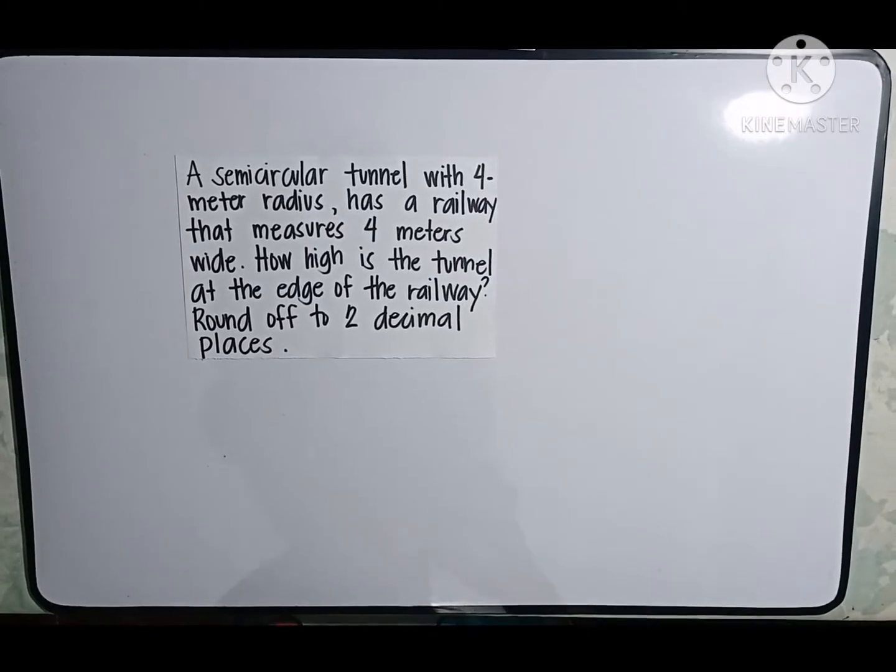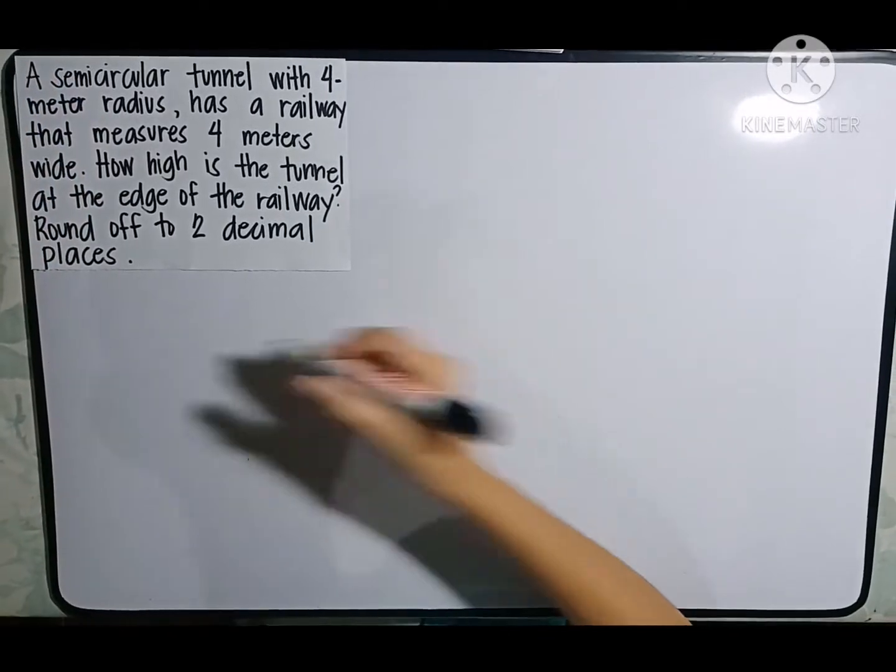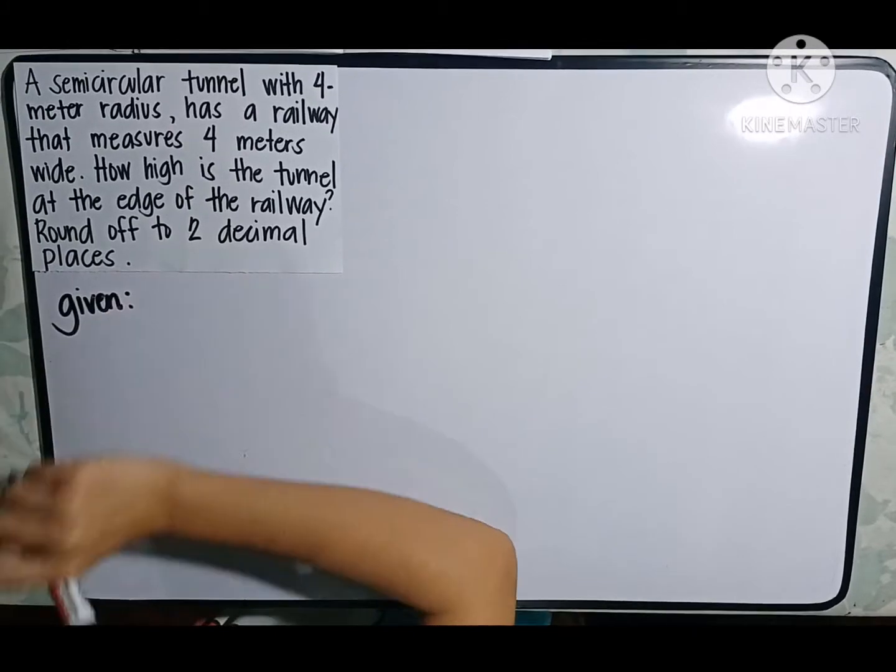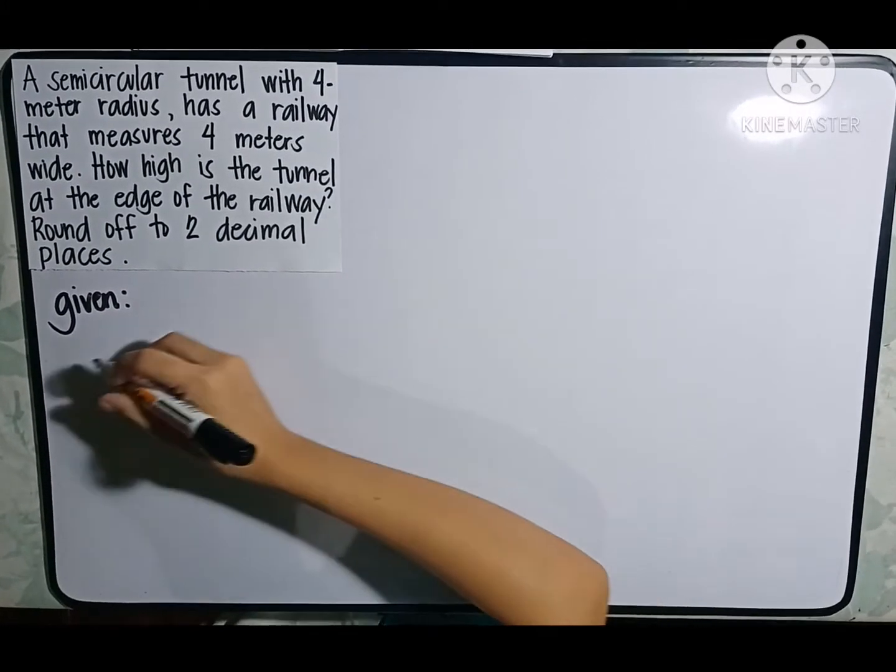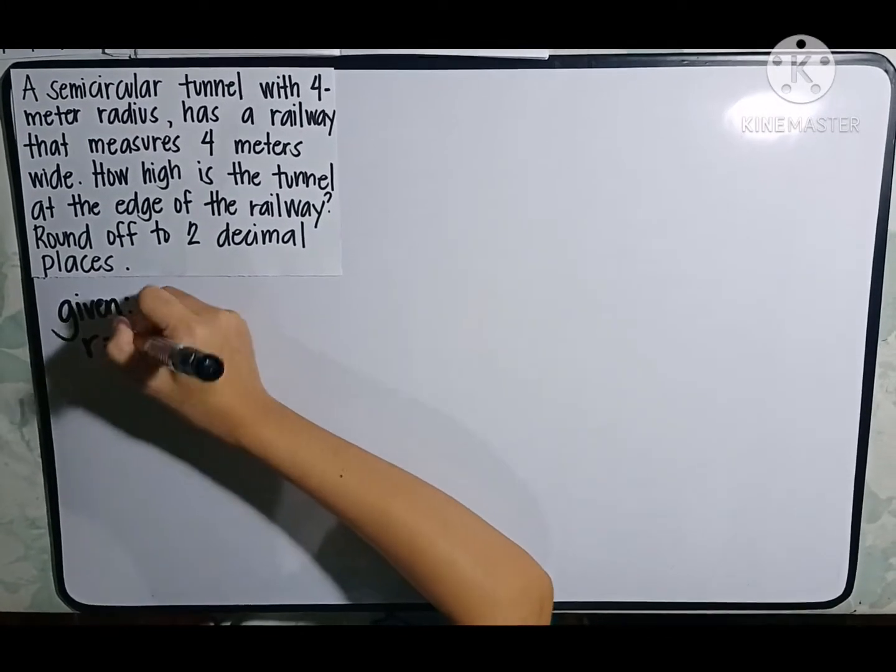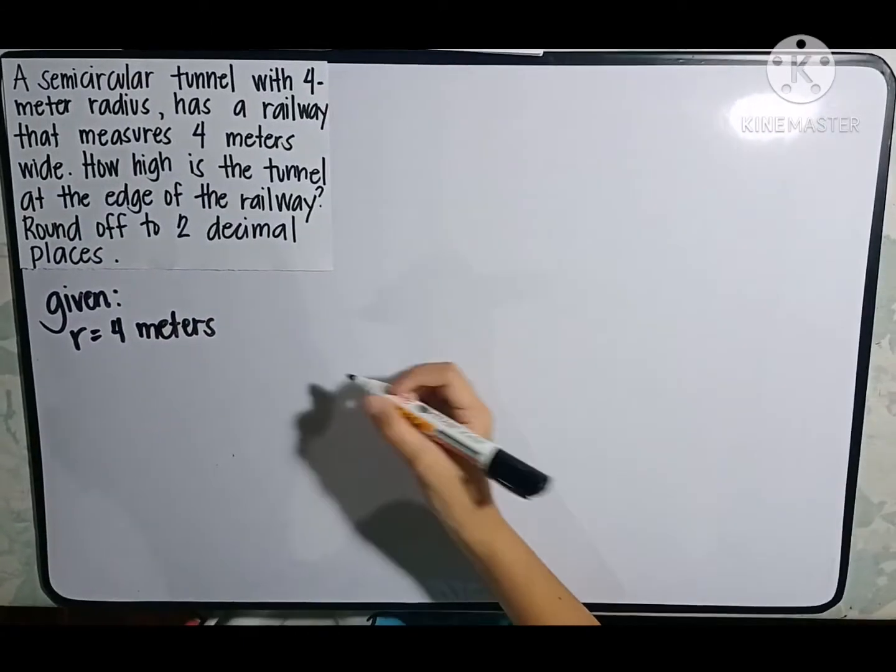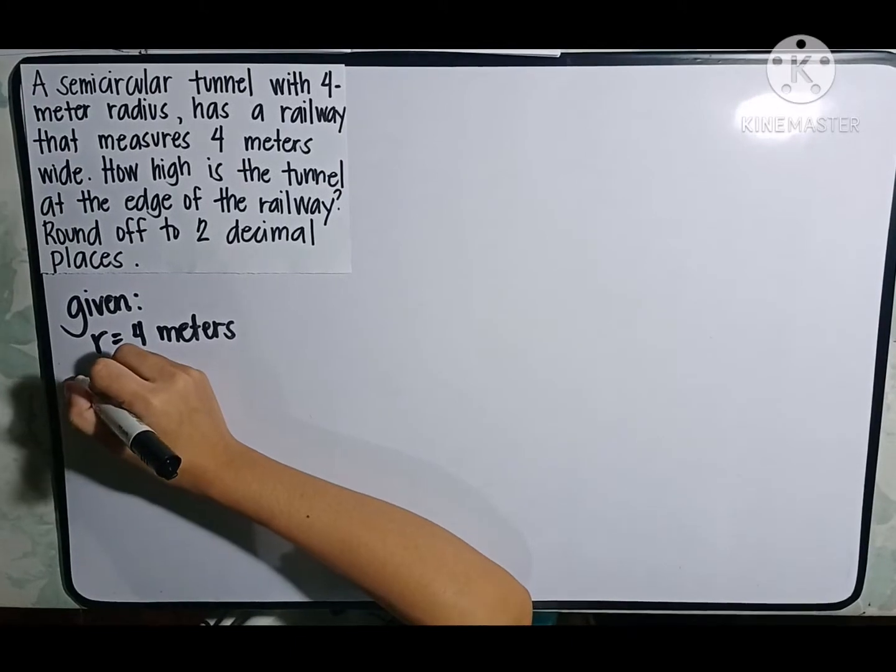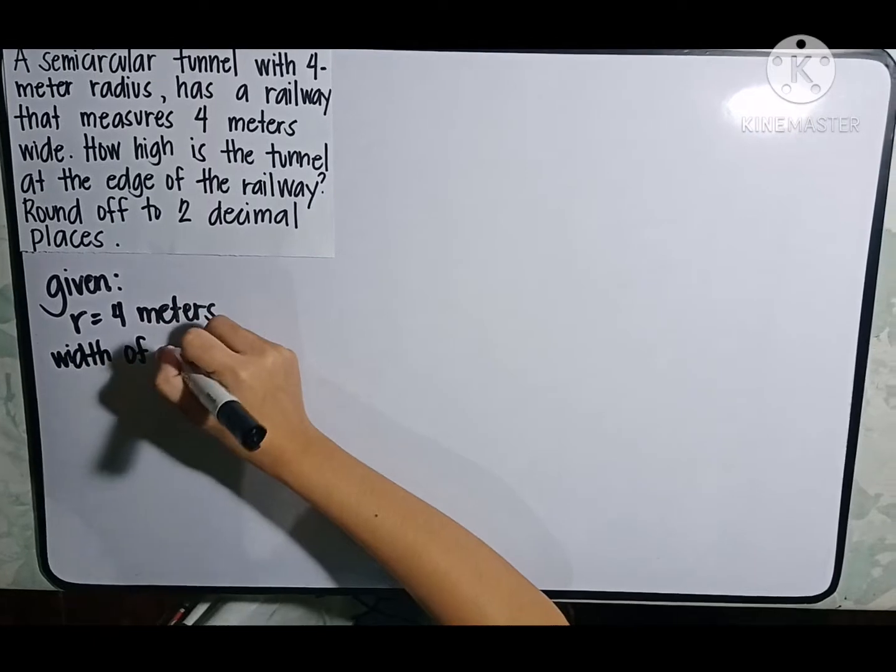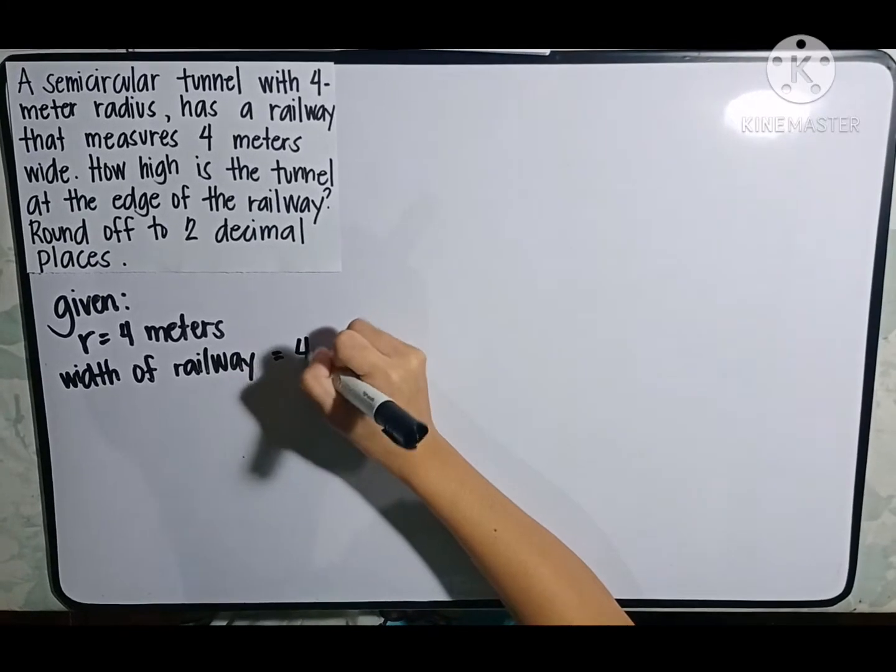In problem solving, first we need to write what are the givens. So the givens, we have here a tunnel with 4 meter radius. The radius is equal to 4 meters. Then the width of the railway, which is equal to 4 meters.